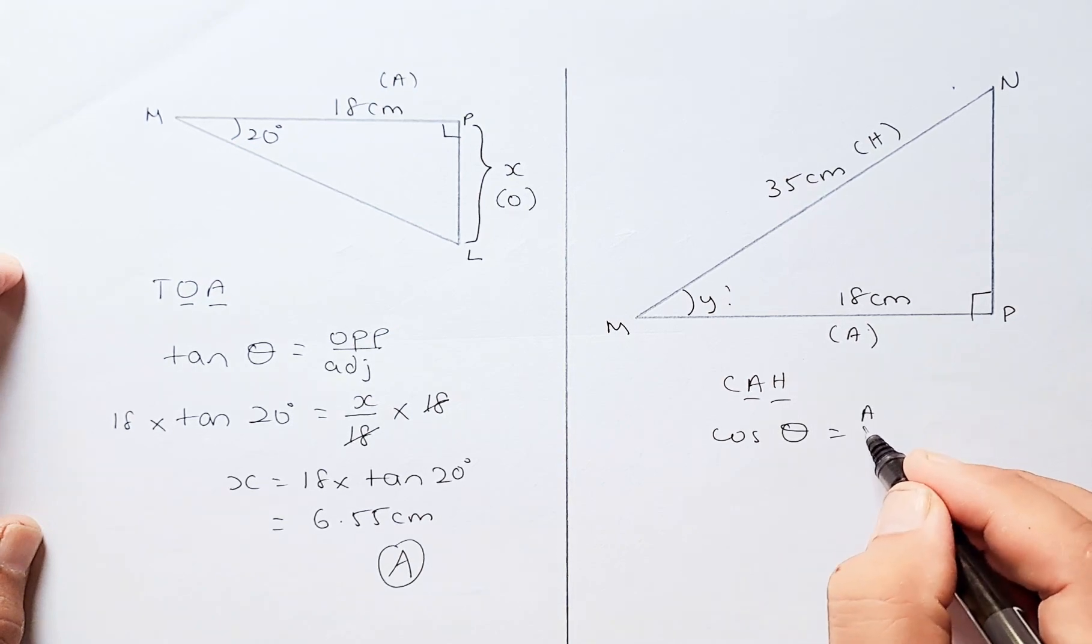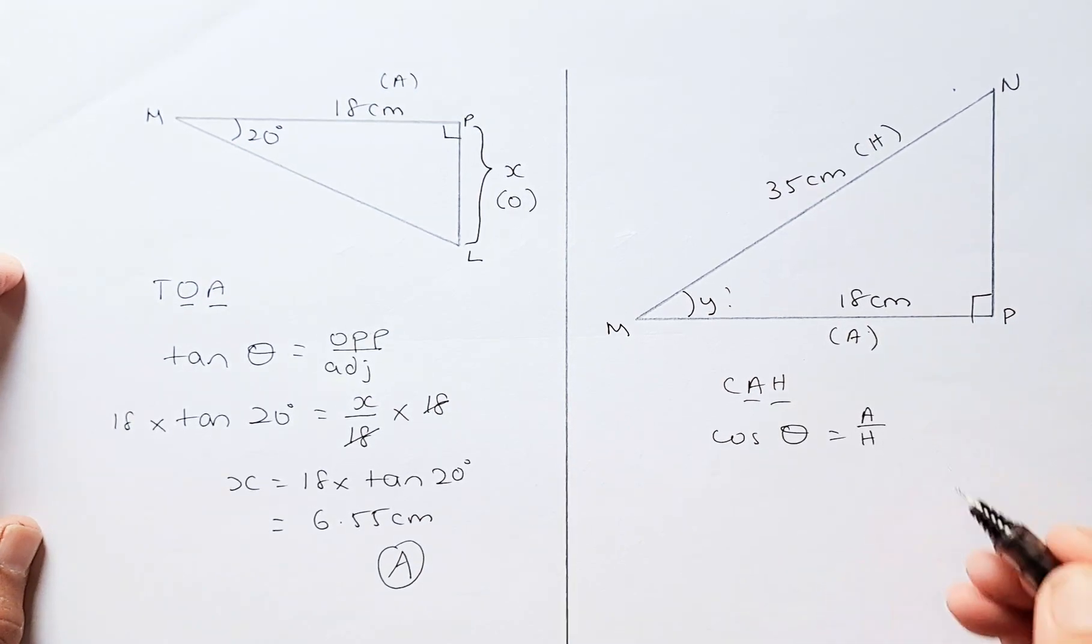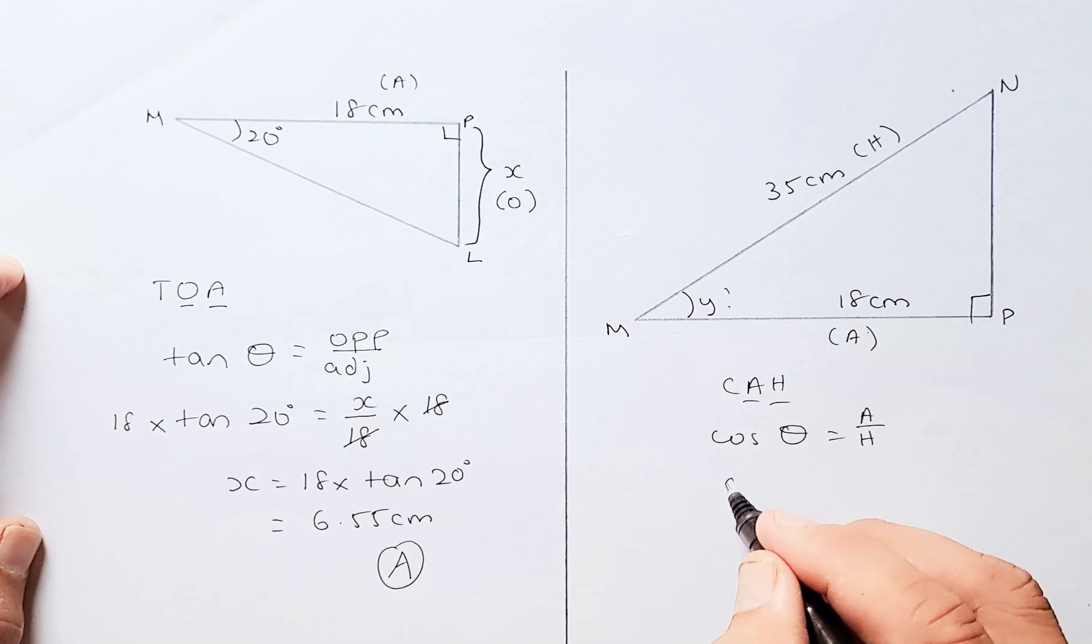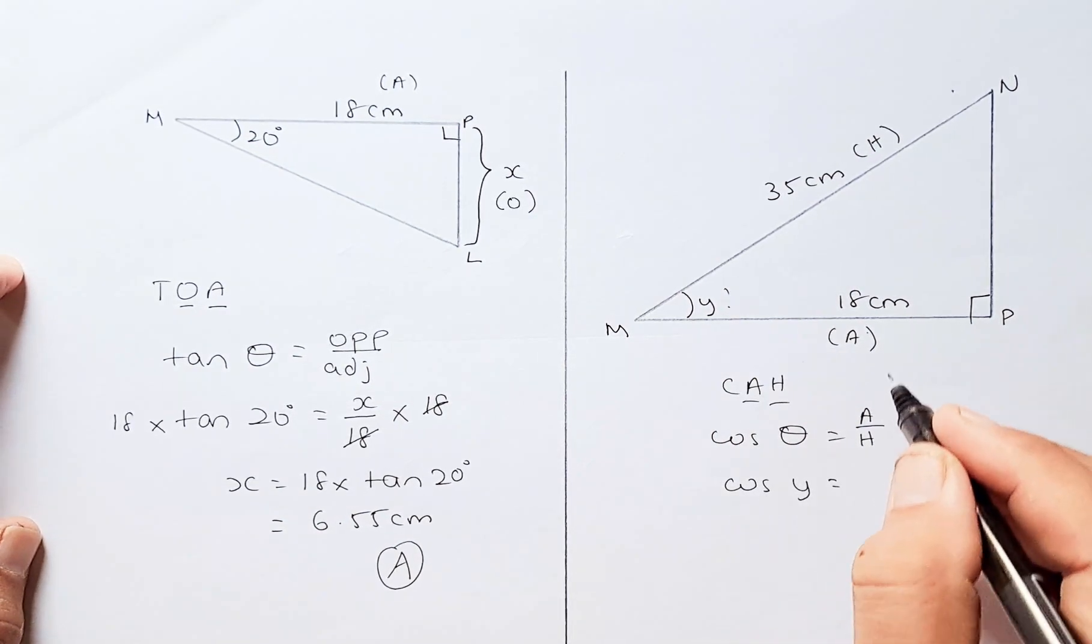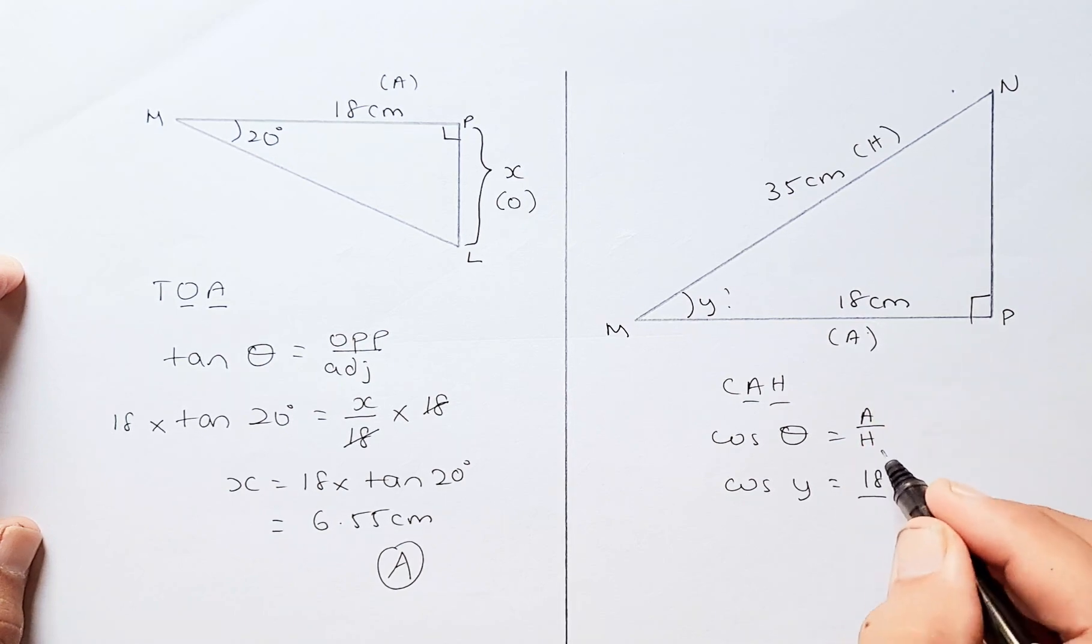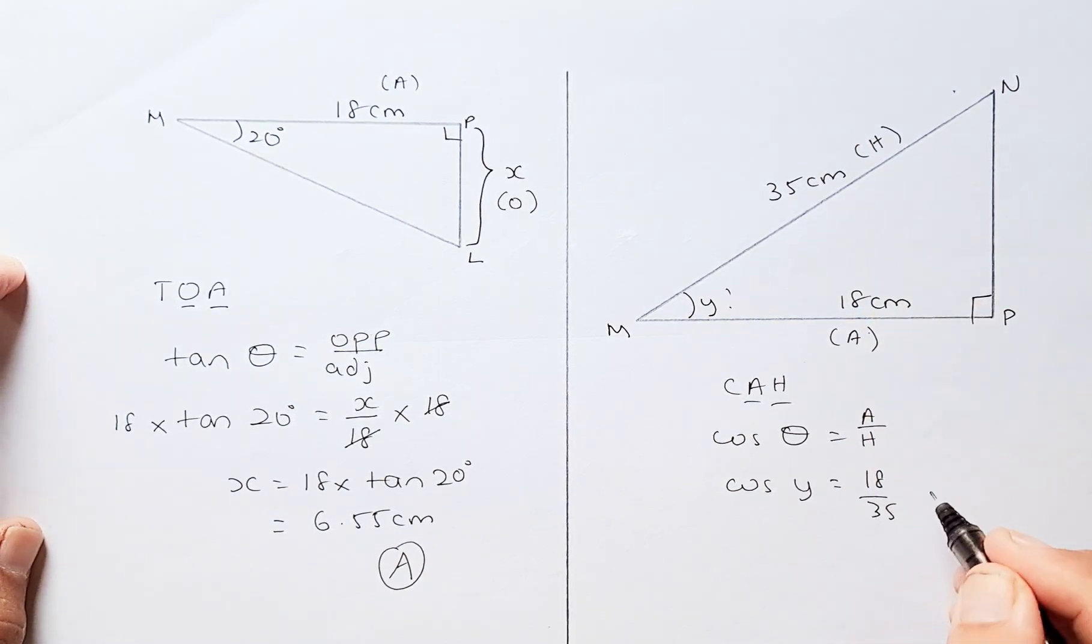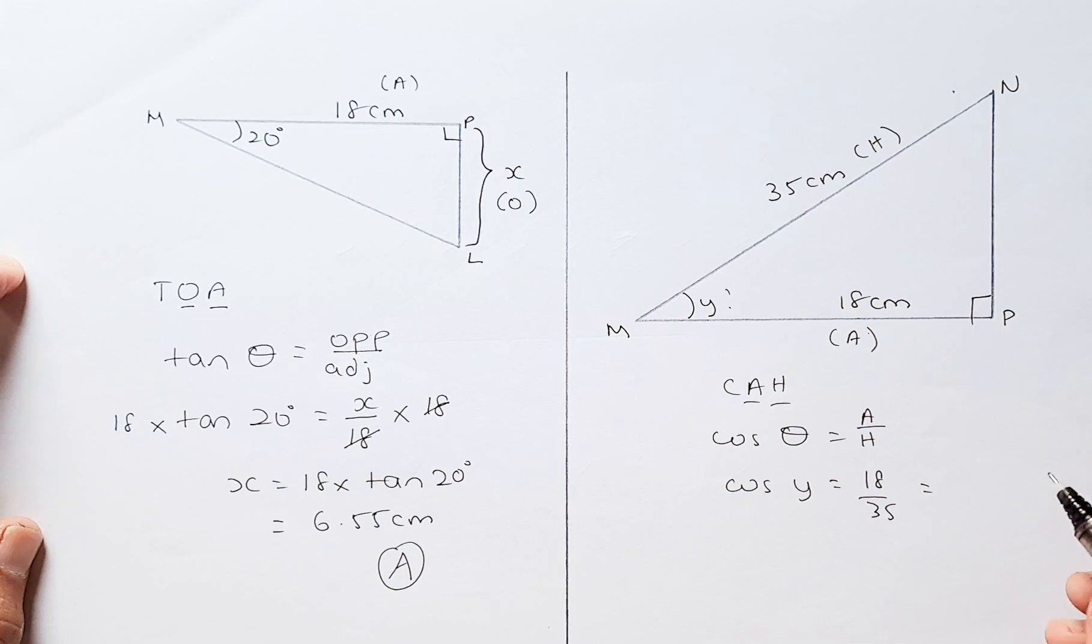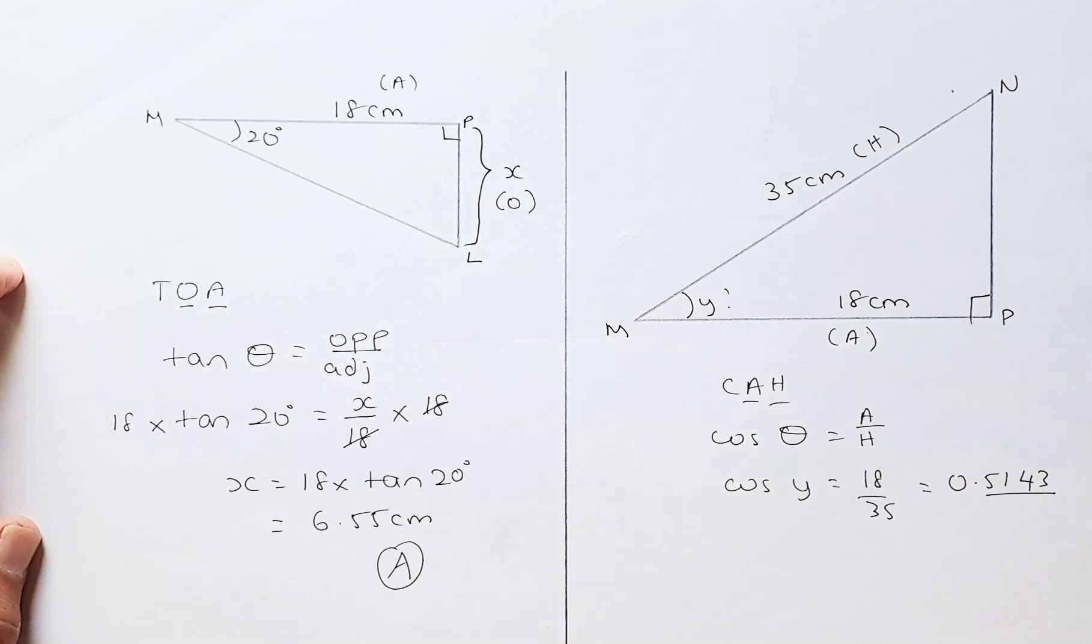So the formula is cos theta equals adjacent over hypotenuse. So next, you are going to substitute the numbers. Theta is Y, so cos Y, adjacent is 18, and hypotenuse is 35. You put in your calculator, the answer is 0.5143. Please make sure you have at least 4 decimal places. If you round up too early, your answers will be very different. So now the last step,